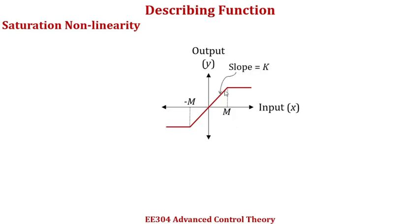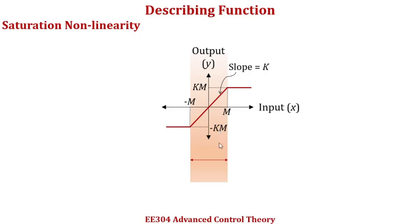Now if the slope of this particular line is k, then this corner has a y value of km and this corner has a y value of minus km. The entire input-output characteristics in the two-dimensional plane can be divided into three parts: this flat line, this straight line here, and this straight line on the other side.